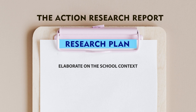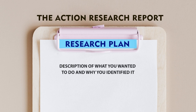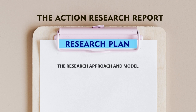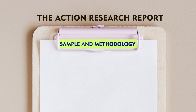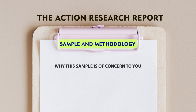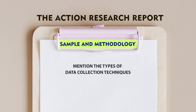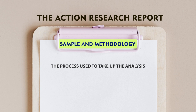Then you write your research plan. If you are preparing a research proposal, you write what you are going to do; if preparing a research report, you write what you have done. You elaborate the school context, describe what you want to do and why you identified the problem. You also discuss the research approach and model you will follow, the sample, and the methodology for selecting the sample — why this particular sample was chosen, what data collection techniques you will use, and the process for analysis.